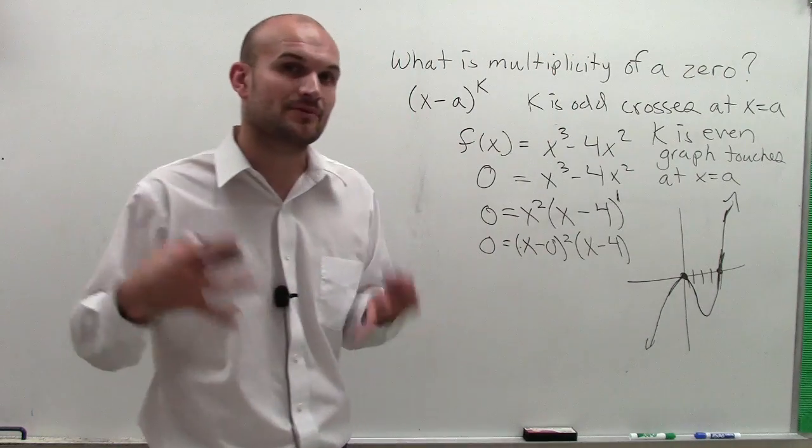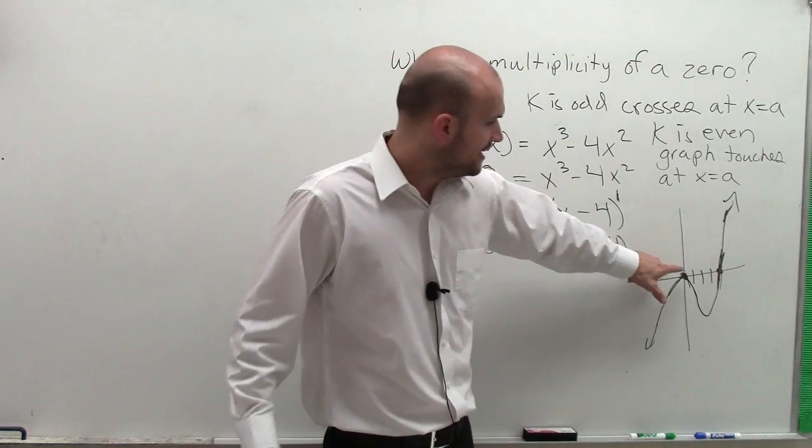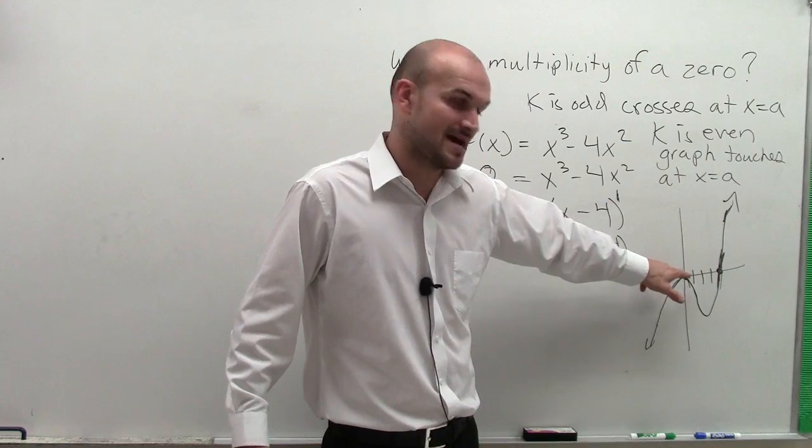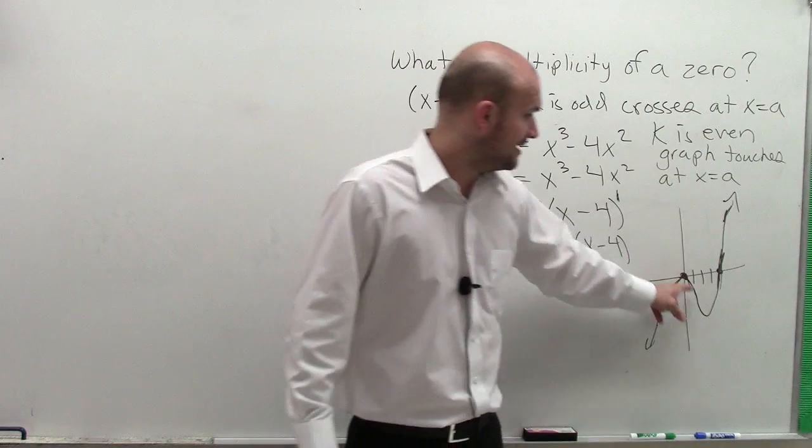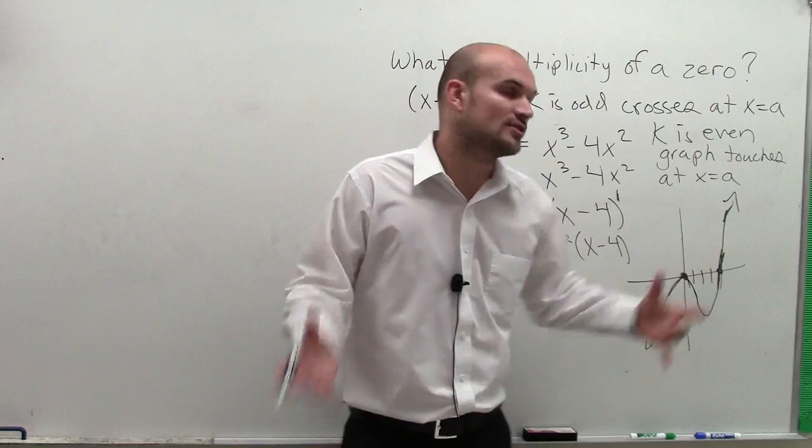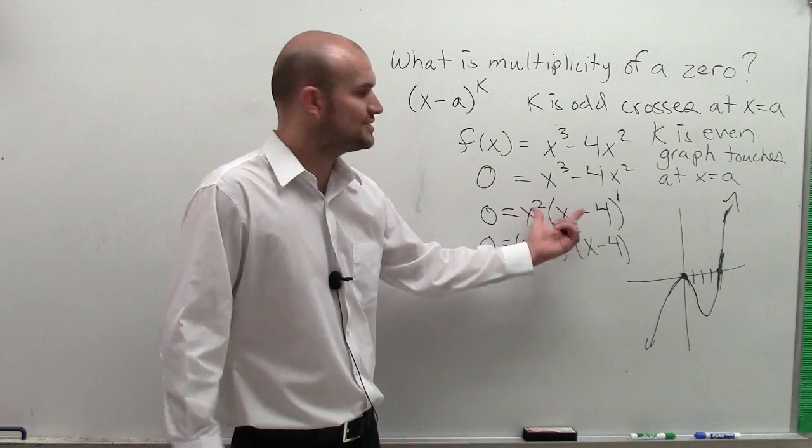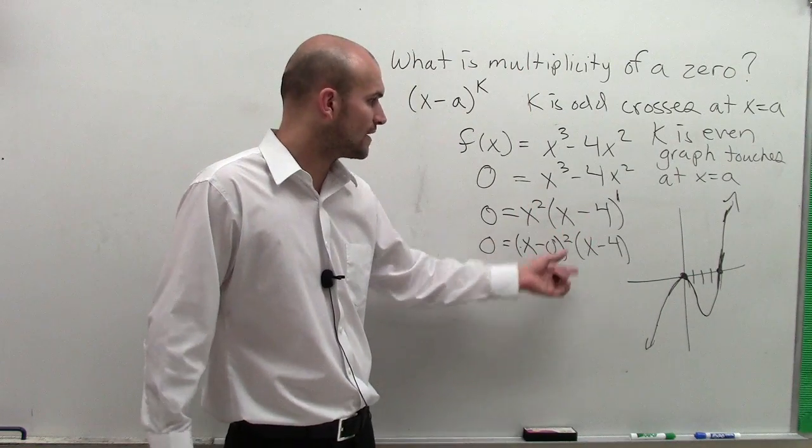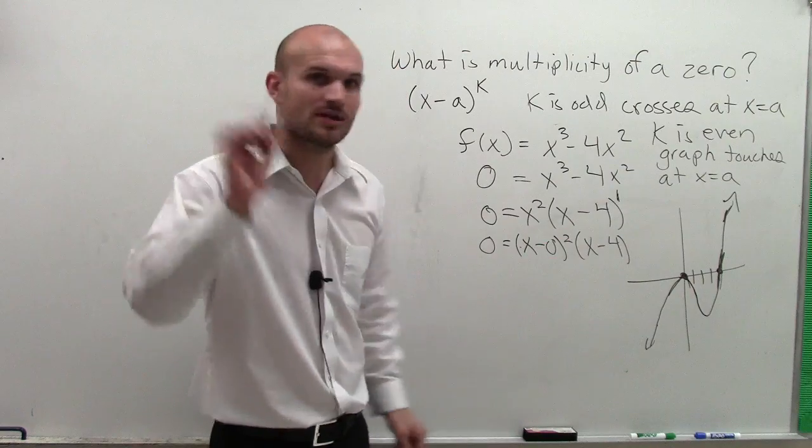So when you have an even multiplicity, it's going to touch the graph but not cross it. When you have an odd multiplicity, it's going to cross the graph. That all depends on your factors. Write your factors out in factored form and then look at the exponents.